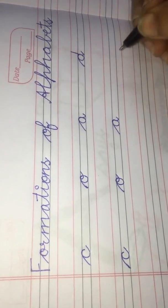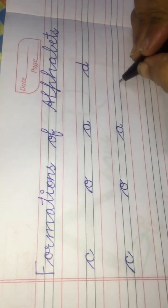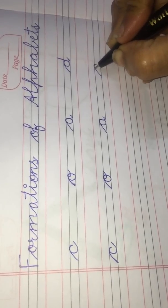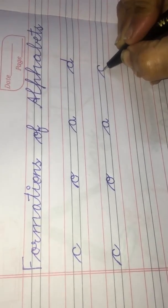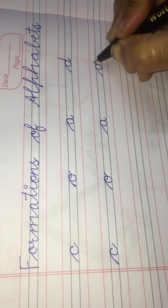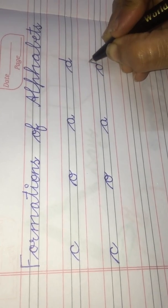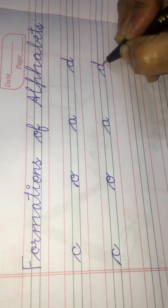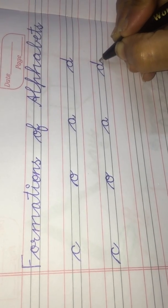Now letter D. Make a slant line, curve, go up, touch the red line, come down and go up.